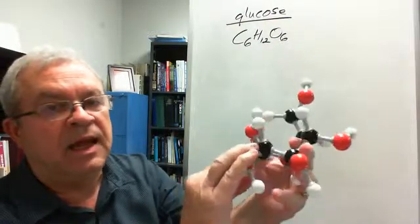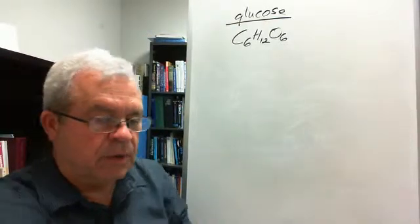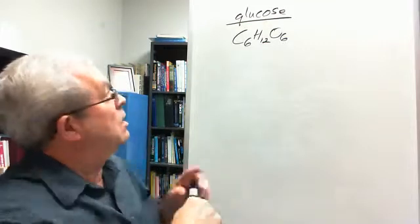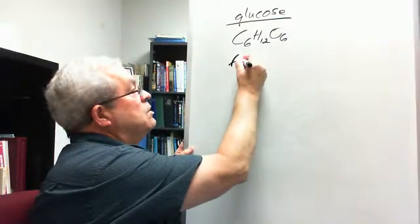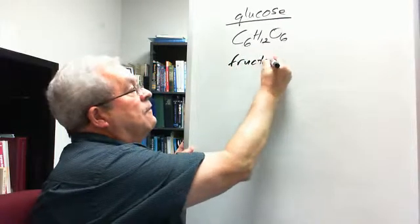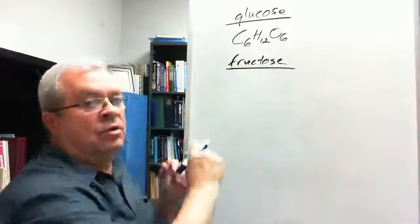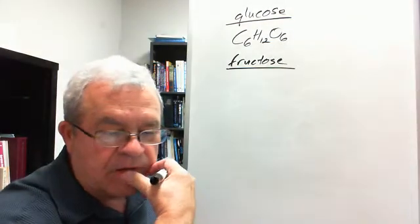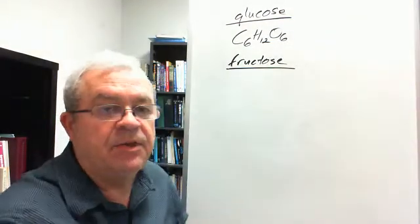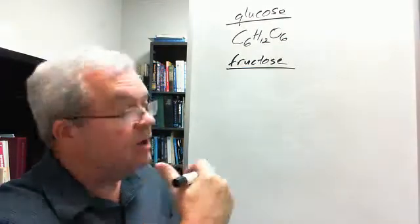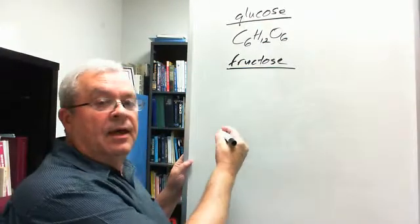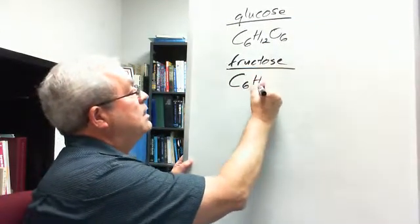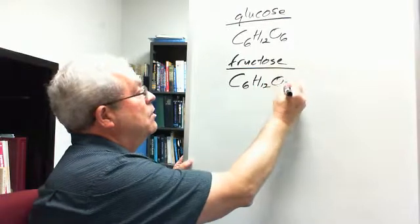But in your study guide questions below, there's a question, this question: what is the formula for a fructose molecule? What is that? Well, let's see, fructose, fructose. Yeah, I get these confused sometimes. Let's see, what is that? Oh yeah, here it is. Fructose, it is C6H12O6.